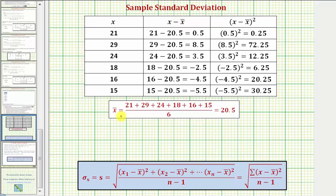Notice below I determine the mean or x bar by summing the data values and dividing by the number of data values which was six, which gave a mean of 20.5.